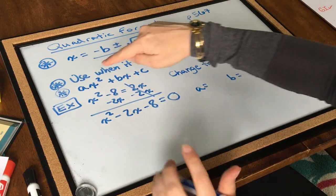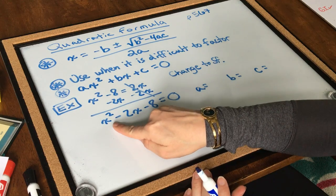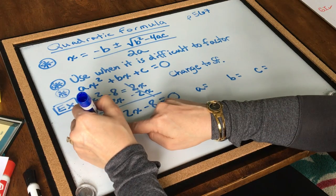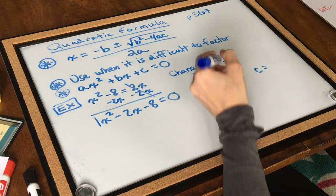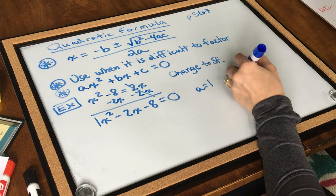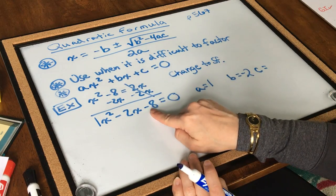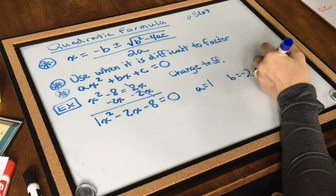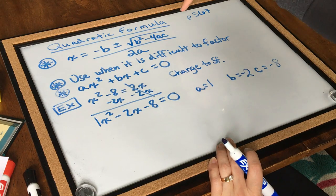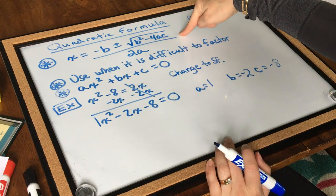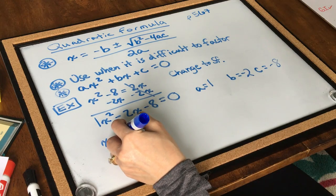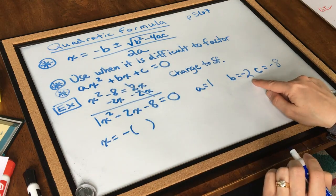Looking at the ax squared term, there's no number in front of the x squared, but I know there's a secret hidden one, so my a equals 1. My b — I have a negative sign here — so b is negative 2. And my c, in the c position, is negative 8. Now I need to plug all of these into the formula. So x equals negative b — I'm going to plug my b in parentheses.